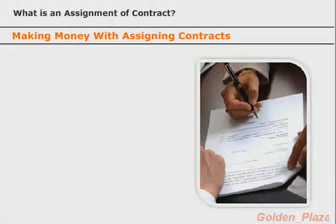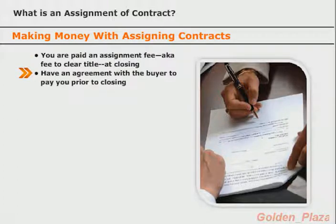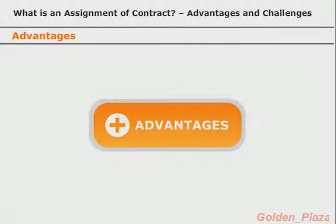Often, but not always, you are paid an assignment fee at closing, sometimes classified as a fee to clear title. Another way you get paid is to have an agreement with the buyer to pay you prior to closing — make sure this agreement is in writing with very clear terms and conditions. As with all methods of making money in real estate, there are both advantages and challenges to assigning contracts.